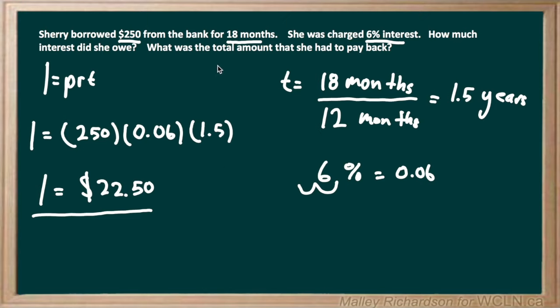But now we want to find the total amount that she had to pay back. We know that she borrowed $250 from the bank, so she is automatically going to have to pay back that $250 because she only borrowed it. But she was also charged interest, and we solved that total interest was $22.50.